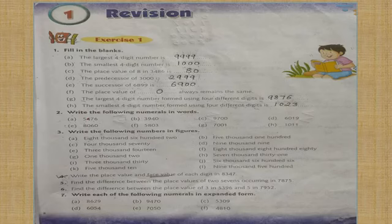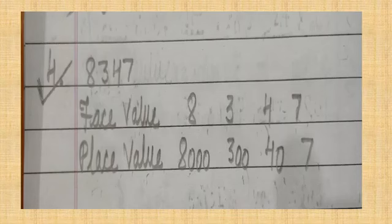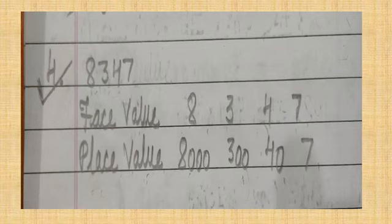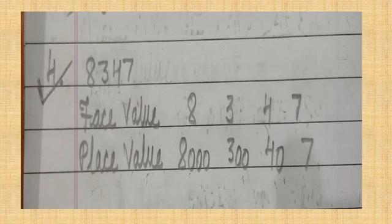First you have to learn the difference between face value and place value. Face value means the number itself, and place value means the place the digit occupies in the given number. For example, eight occupies the place of thousands, so it is eight thousand; three occupies hundreds, so it is three hundred; four occupies tens, so it is forty; and seven is in the ones place. So the number is eight thousand three hundred and forty-seven.